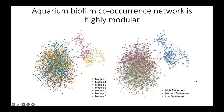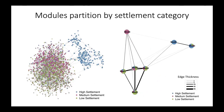The network on the right is the same exact network on the left, except we have changed the node colouring to represent a pie chart showing the distribution of where that microbe is found across high, medium, and low settlement-inducing biofilms. When we simplify our networks, it's easier to visualise that modules are partitioning by settlement category. This simplified network collapses all of the nodes in a module into a single node, and the pie chart represents the settlement distribution of all the nodes in that module. We can see our seven different modules more distinctively, and we can think of these different modules as representatives of microbial communities that induce different levels of settlement. For example, module six is representing a microbial community that will induce high levels of Acropora tenuis coral settlement, whereas module two would induce low levels of settlement.